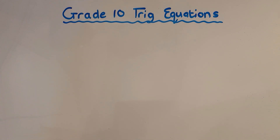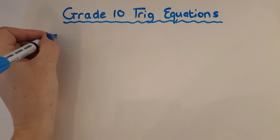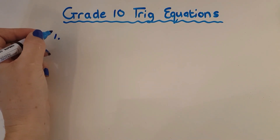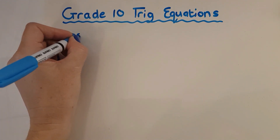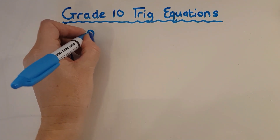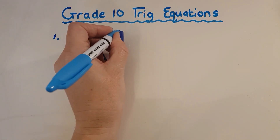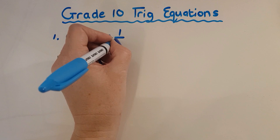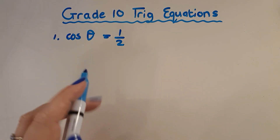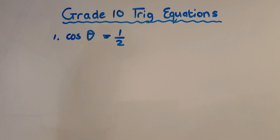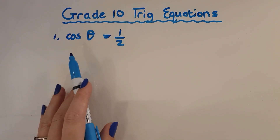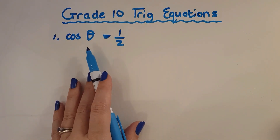In trig equations we're solving for the unknown angle. I'm going to start with a really basic one: cos theta equals a half. In this, the unknown is the theta.